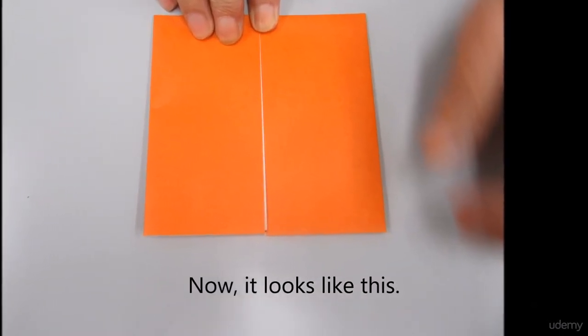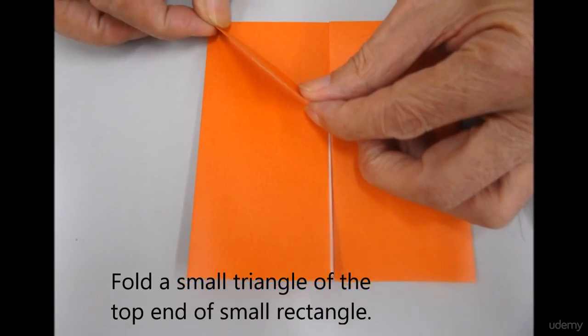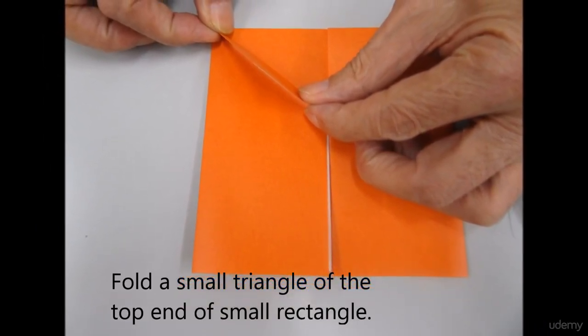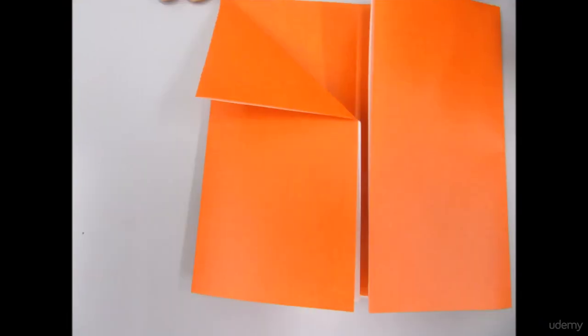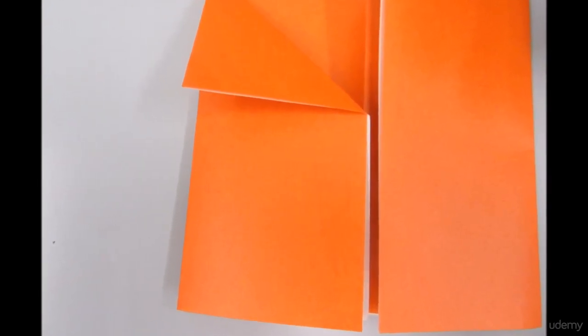Now, this is what you have. Fold a small triangle on the top end of the small rectangle, and do the same for the other side.